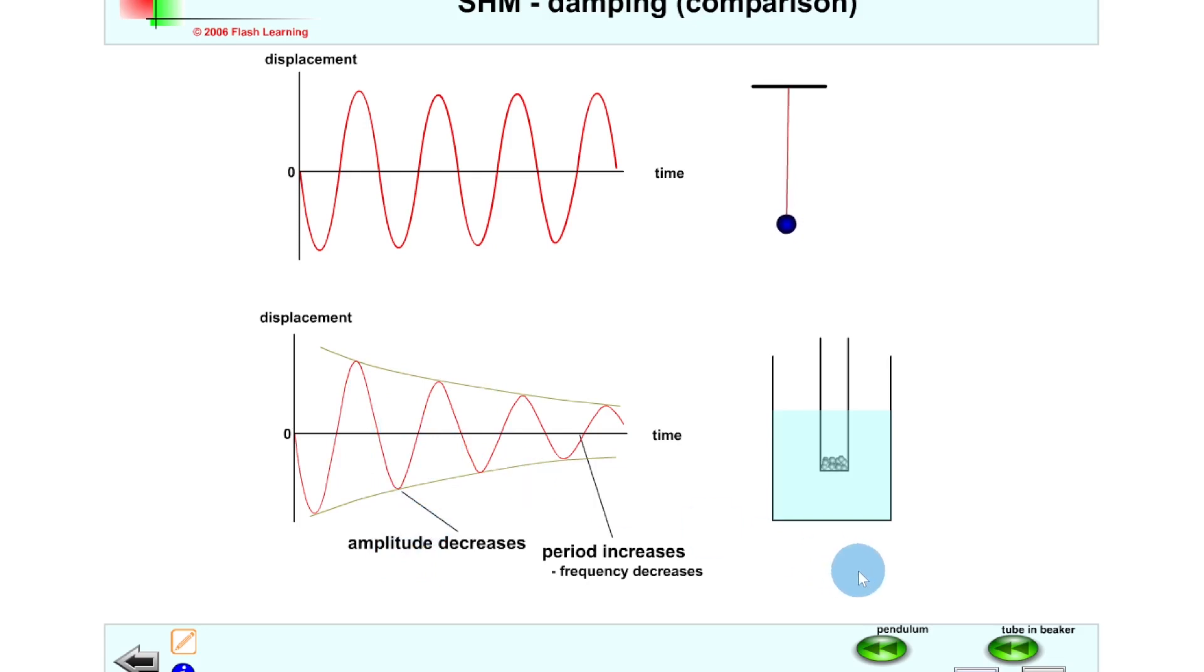And you can also see if we overlap the initial graph of the undamped system, you can actually see that the period will increase. So the length of one wavelength, i.e. one full wave, will get bigger on the x-axis. So the time will get longer, i.e. the period will increase. And this means that since frequency equals one divided by the period, then they are inversely proportional, so the frequency must decrease. So we should have a smaller number of waves appearing as the amplitude reduces.